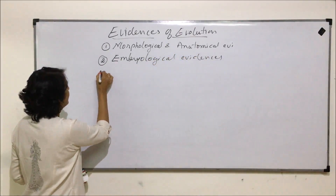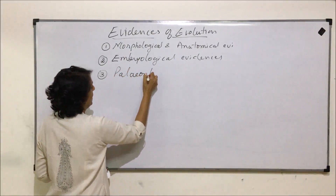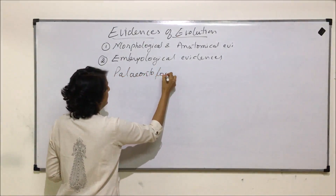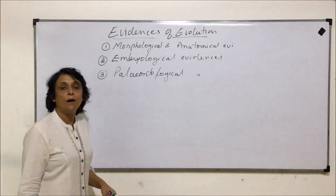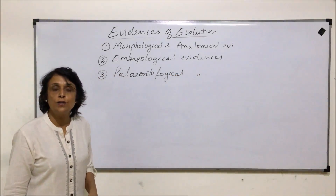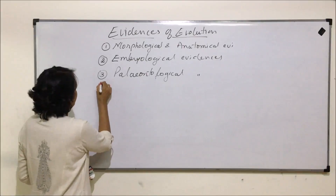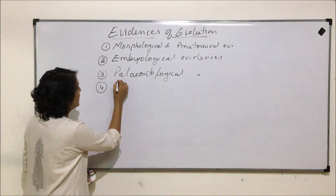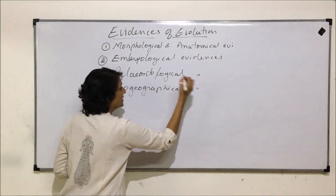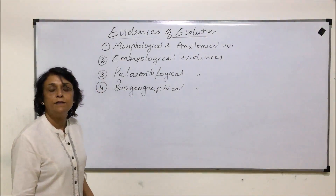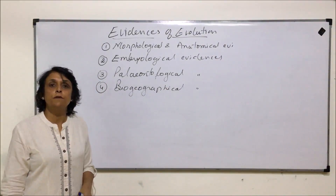The third category is paleontological evidences, under which we talk about various fossils and in which time period organisms evolved. The fourth category is biogeographical evidences, under which we discuss how various organisms got distributed in different parts of the globe.